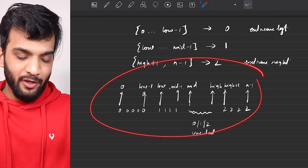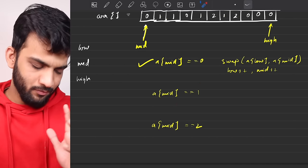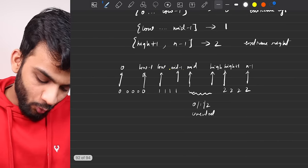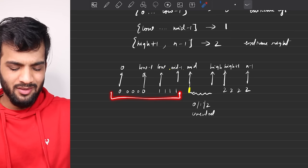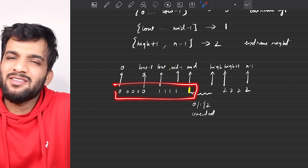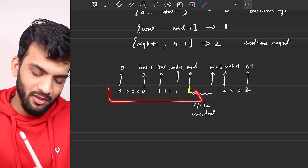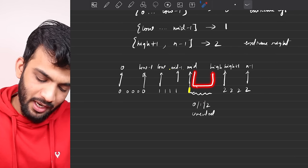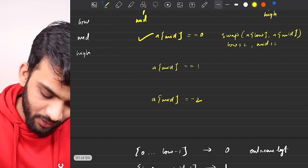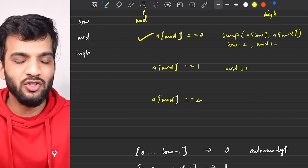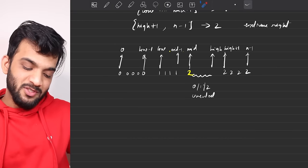Case 2: a[mid] == 1. A one is already in the correct section (low to mid-1 should be ones), so the element is already in sorted order. We don't need to do anything — just move mid forward: mid++.